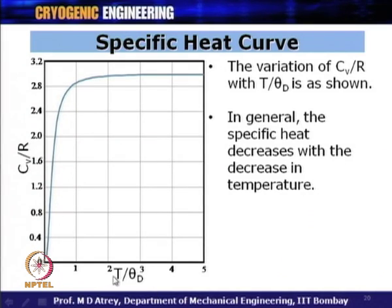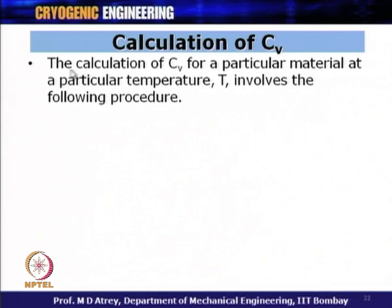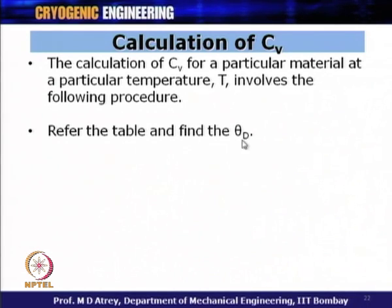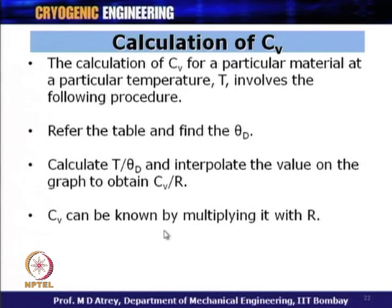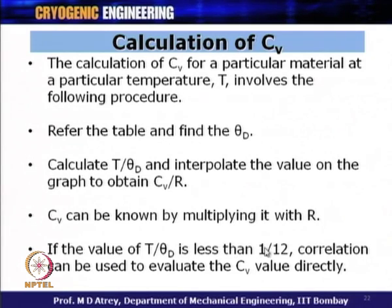To calculate Cv for a material at temperature T: refer to the table to find θ_D, calculate T/θ_D, and interpolate on the graph to obtain Cv/R. Multiply by R (the specific gas constant) to get Cv. If T/θ_D < 1/12, use the low-temperature Debye expression directly. In general, specific heat decreases with decreasing temperature.